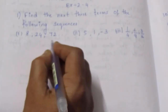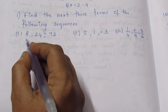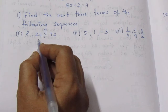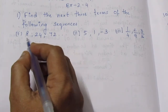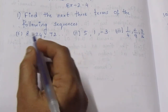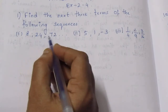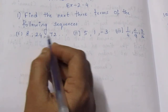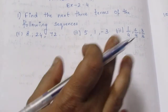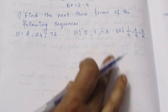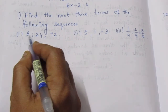Let's look at the first sum: 8, 24, 72. We observe this is not simple addition — it involves multiplication. We will try to find the pattern using this concept.